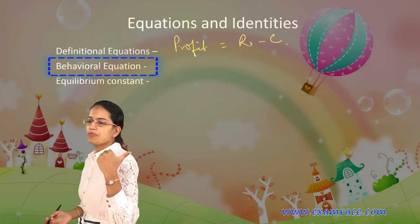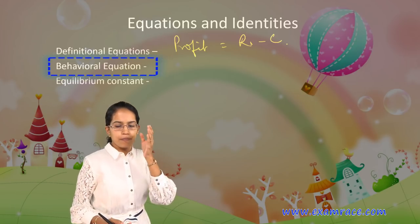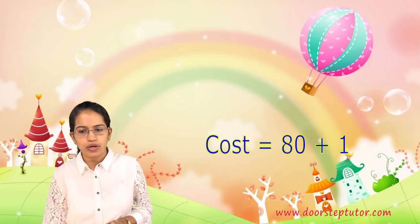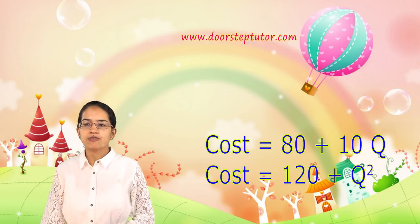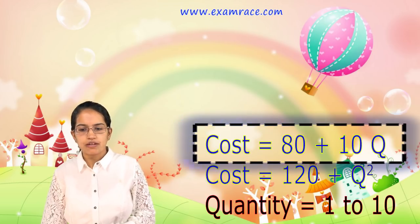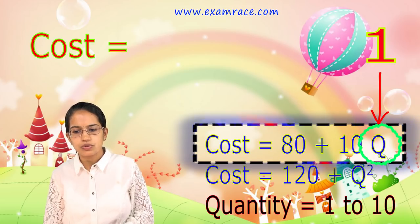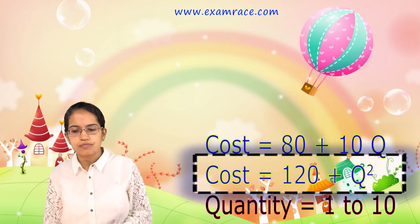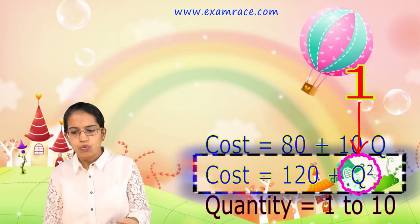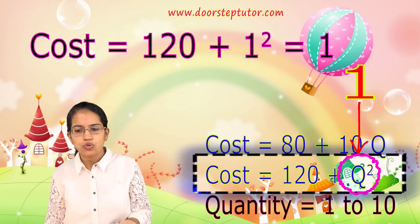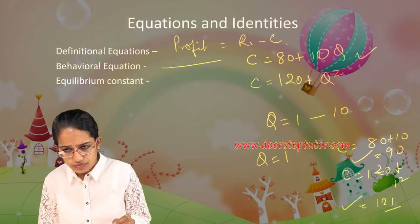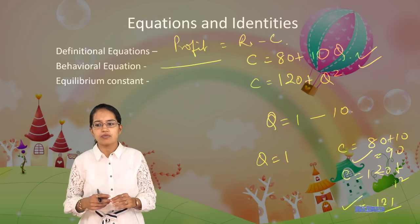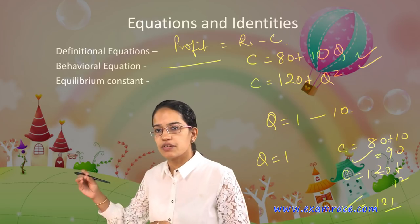The next is a behavioral equation, which explains how a variable behaves in response to changes in another variable. For example, cost equals 80 plus 10 times quantity. But there could be another equation where cost equals 120 plus quantity squared. If quantity equals 1, the first equation gives cost of 90, while the second gives 121. So different costs result depending on the equation chosen — that's the behavioral equation.